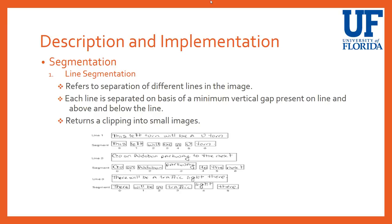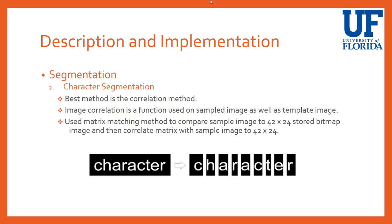The next step is line segmentation, which refers to the separation of different lines in the image. Each line is separated based on the minimum vertical gap present above and below the line. This gap helps detect and separate different lines of characters, and returns a clipping into small images — one for each line.